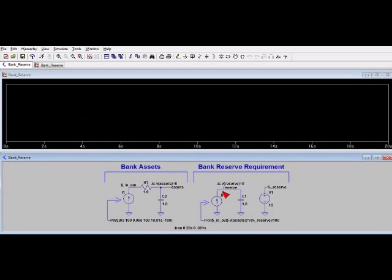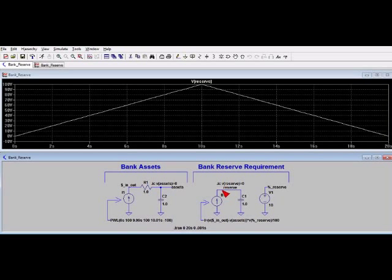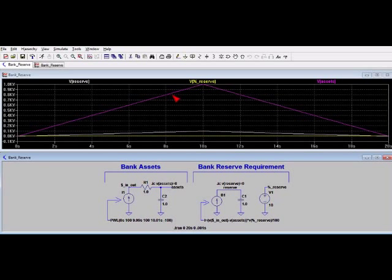Let's look at our reserve requirement. So this is our reserve requirement. Let's probe our percent reserve, set at 10 volts or 10 percent. Now let's probe our bank assets. And that's shown in purple.